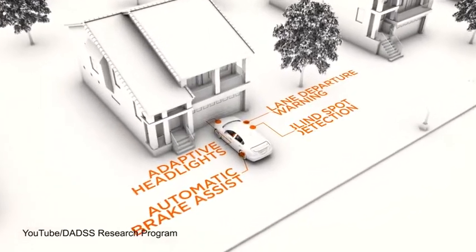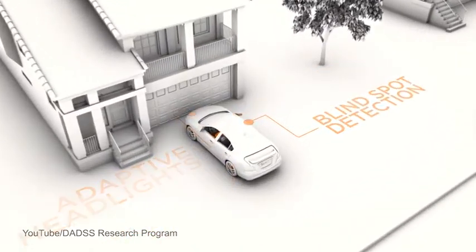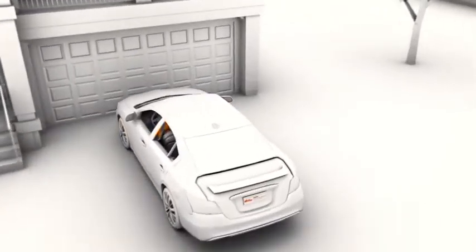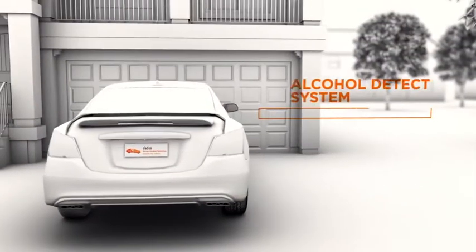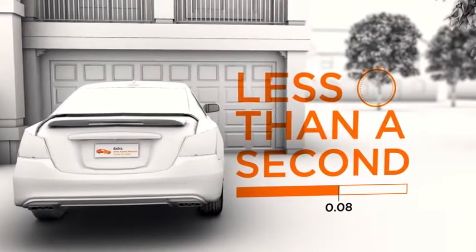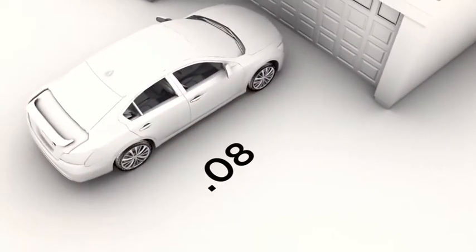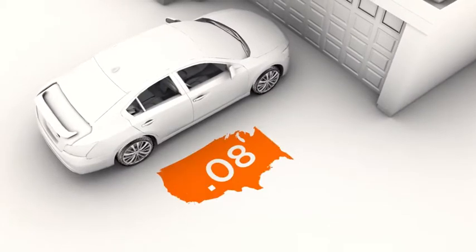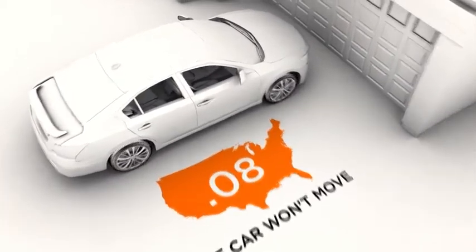Our cars are getting smarter, and now a new safety feature is being developed to protect against drunk driving. The alcohol detection system will measure the alcohol in a driver's blood in less than a second. If it is above .08, the legal limit in all 50 states, the vehicle won't move.